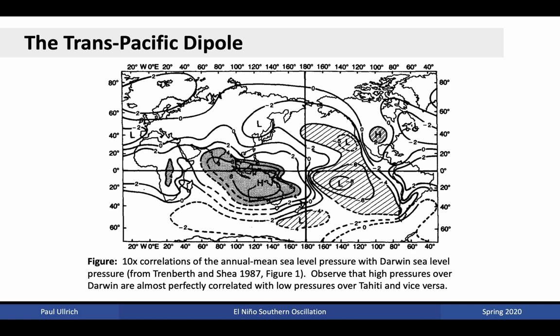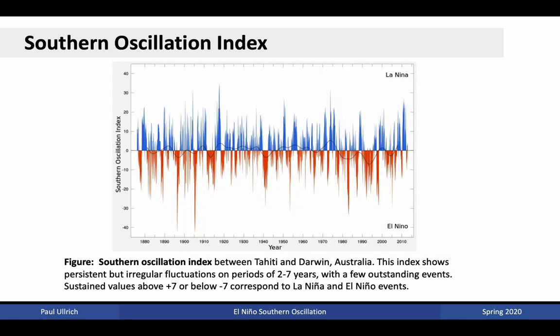Here is a plot of the transpacific dipole, which is a representation of these pressure differences that occur across the Pacific. Whenever pressures are high in Darwin, we see low pressures in Tahiti, with almost perfect anticorrelation. Consequently, these two locations are very representative of this transpacific dipole. Monthly values of the Southern Oscillation Index are shown here, dating back to before 1880. Positive values are associated with a tendency for lower sea level pressures in the western Pacific, and negative values are associated with lower sea level pressures in the central Pacific. Whenever the index shows sustained values above plus 7, we usually refer to that as a La Niña event. Whenever the sustained value is below negative 7, we refer to that as an El Niño event.